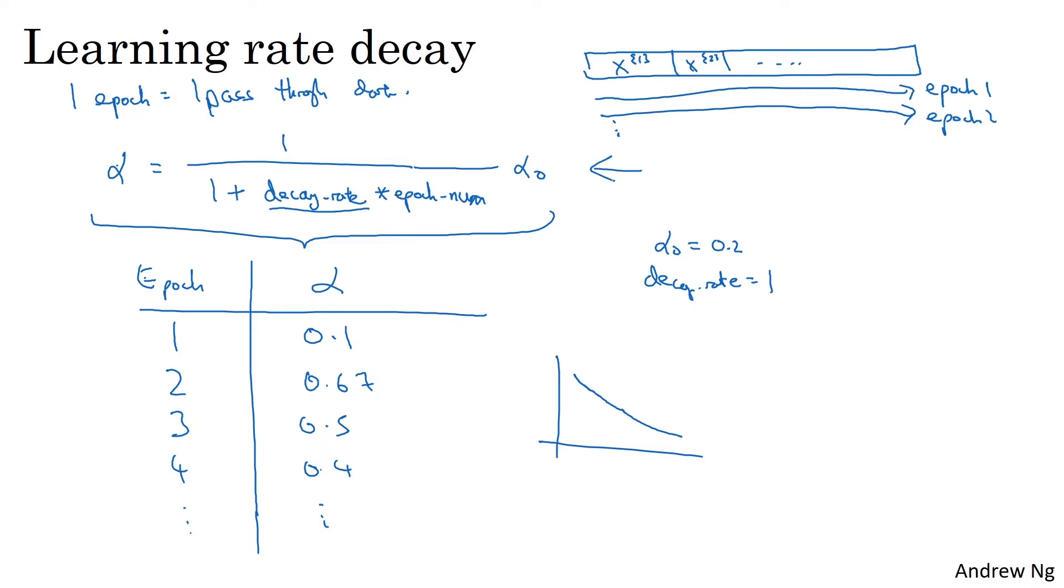So if you wish to use learning rate decay, what you can do is try a variety of values of both hyperparameter alpha zero, as well as of this decay rate hyperparameter, and then try to find a value that works well.